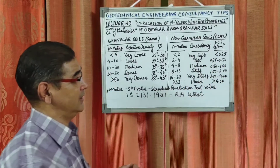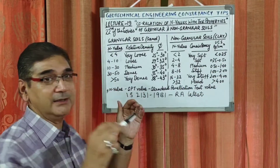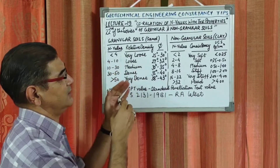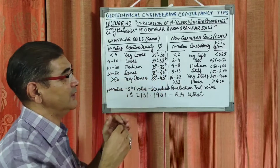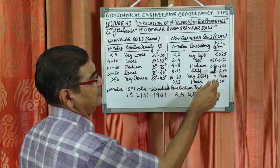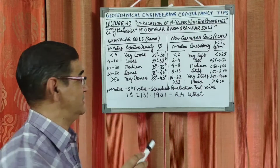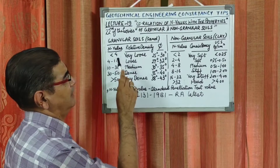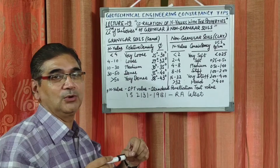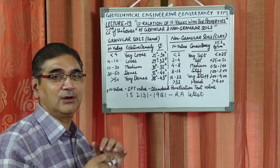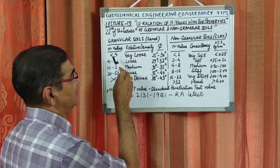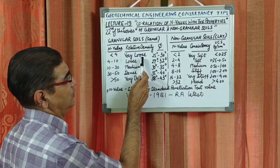In summary, N-values in sandy soil are referred to in terms of relative density and are related to the angle of internal friction. In clay soil, N-values are referred to in terms of consistency and are related to unconfined compressive strength. These tests are conducted vertically throughout the borehole at every 1.5 meter or 3 meter interval, as defined by the scope of work.